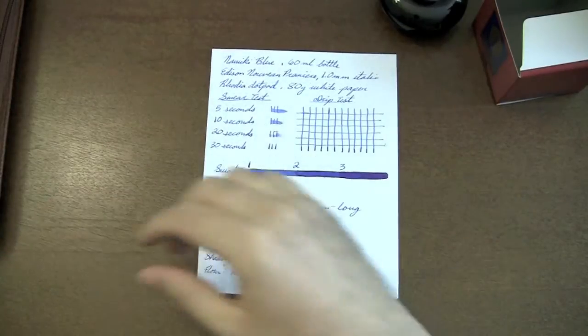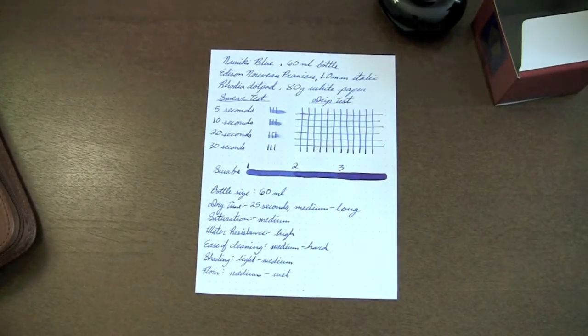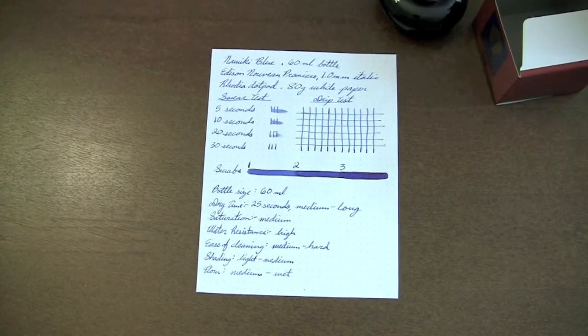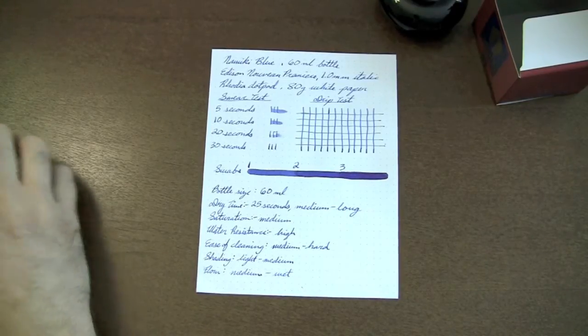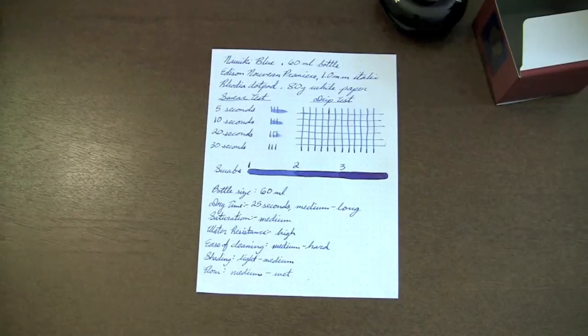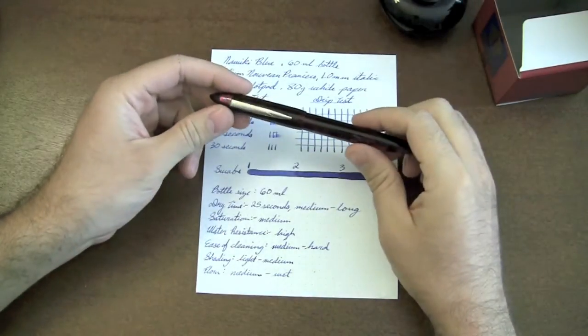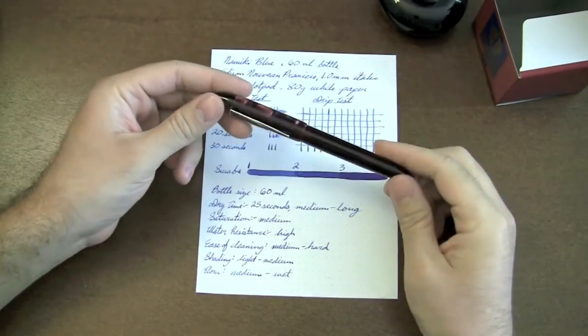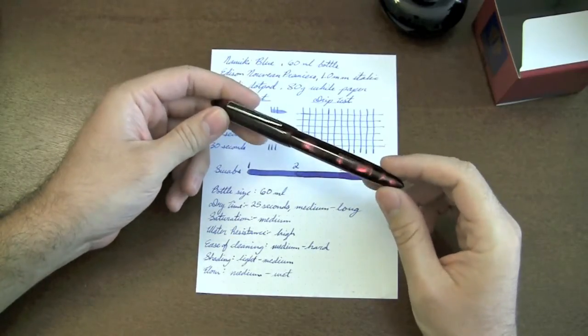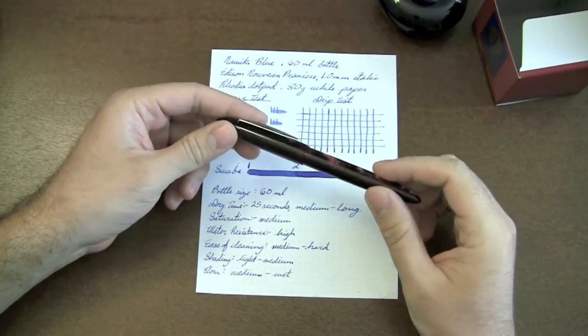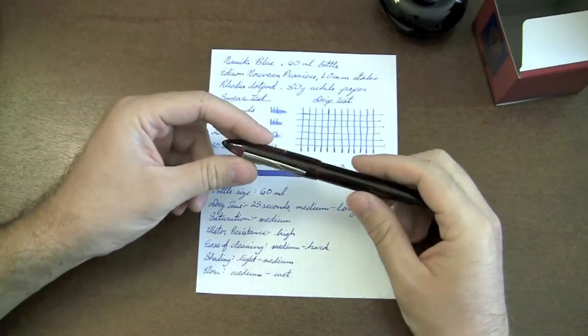For this test, I decided to use a pen that's going to piss all of you off because it's not one that you can easily get yourselves. This is a pen that Brian Gray of the Edison Pen Company made especially for Rachel and myself. I don't know what kind of material this is, but it's like a deep wine crimson color with this chatoyance in it that is really, really deep, like crazy deep. It's really awesome.